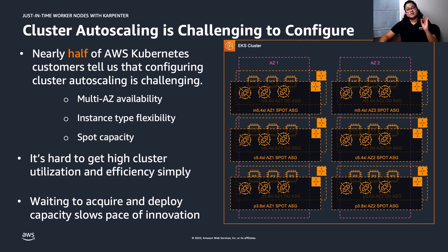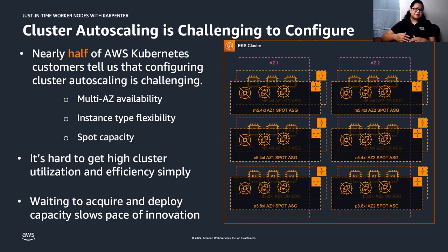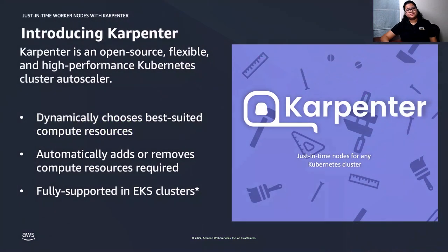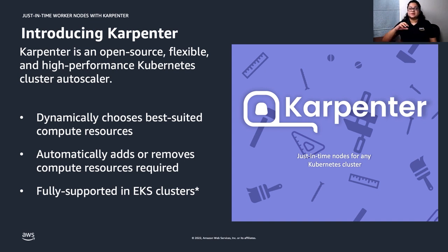AWS customers have over-provisioned resources to ensure a consistent end-user experience — in some cases over-provisioning by 20 to 25 percent. There are also use cases like machine learning or batch workloads where you need to quickly experiment, and having to configure a node group first slows down the pace of innovation. That's where we need Karpenter. Karpenter is an open-source, flexible, high-performing Kubernetes cluster autoscaler that helps improve your application availability and cluster efficiency. It launches right-sized compute resources — for example, Amazon EC2 instances — in response to changing application load in under a minute.